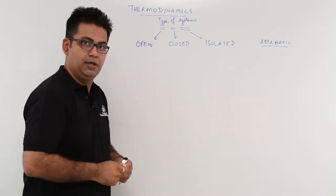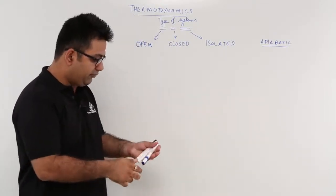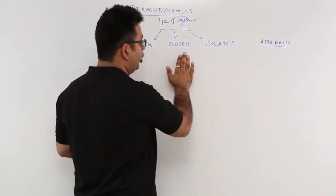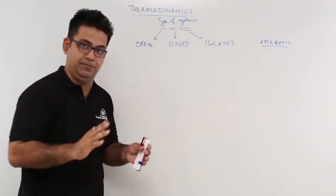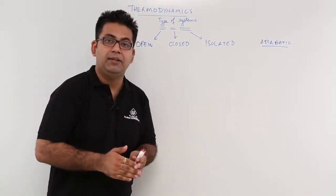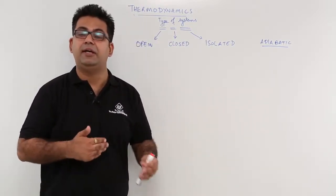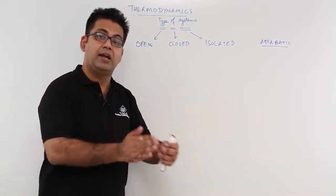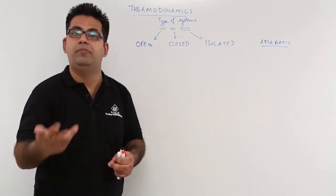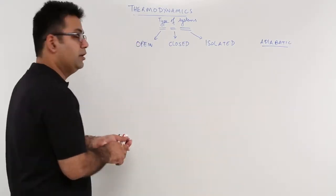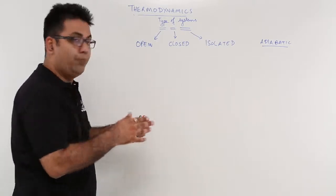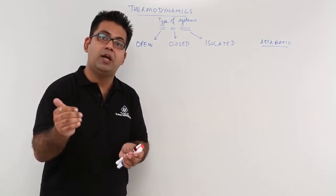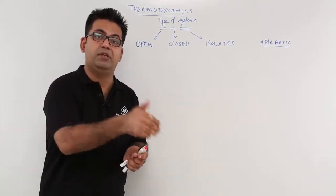So let us first understand the difference between open, closed, and isolated system. In thermodynamics, we deal with energy interaction. Energy interaction can be in the form of heat interaction or work interaction. There is also inflow and outflow of mass happening in a system. If you talk about an open system,